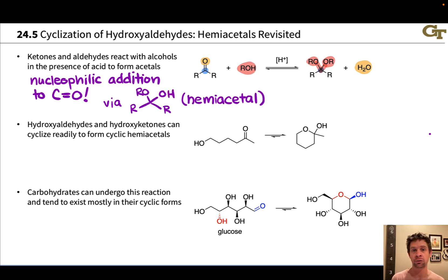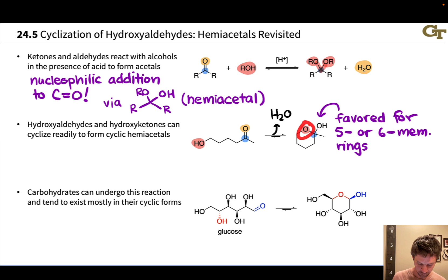And this hemiacetal structure can even be important in hydroxyketones and aldehydes in an intramolecular sense. In other words, if I've got a molecule that has a hydroxyl group and a carbonyl group in it and cyclization would produce a ring of five or six members, it's quite common for the most stable form to actually be the cyclic hemiacetal, which is this structure right here derived from addition of O and H across the CO double bond.